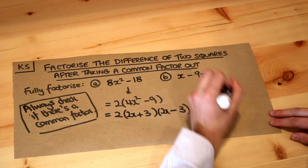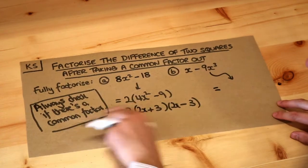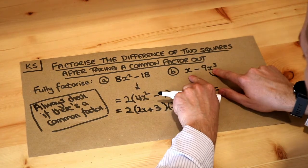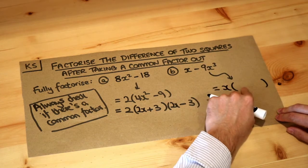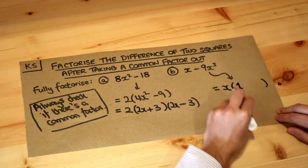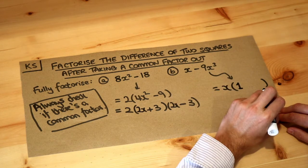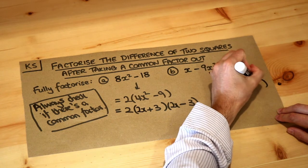What about this one? Well again, we always check if there's a common factor. These have a common factor of x which we can factorise out. Now then, x times what is x? Well it's 1, x times 1 is x. x times what is -9x³? It's -9x².